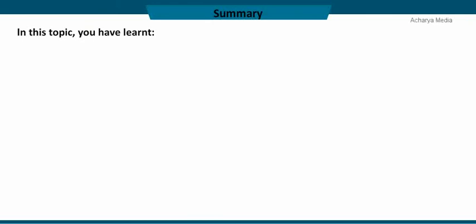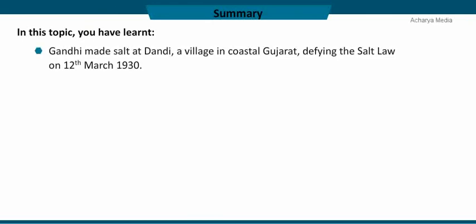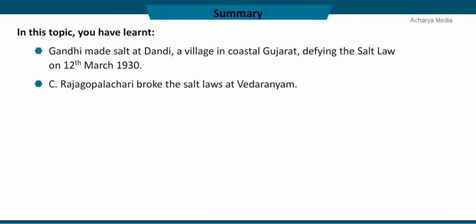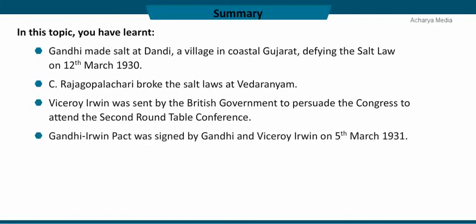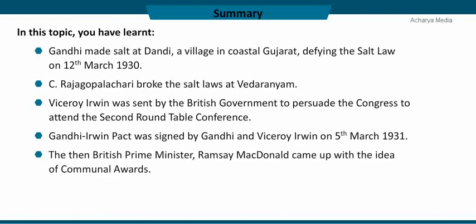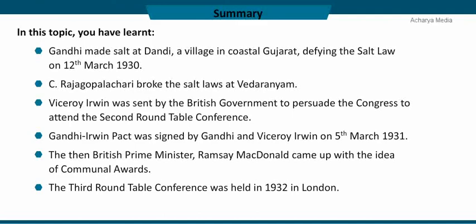In summary: Gandhi made salt at Dandi, a village in coastal Gujarat, defying the salt law on 12 March 1930. C. Rajagopalachari broke the salt laws at Vedaranyam. Viceroy Irwin was sent by the British government to persuade the Congress to attend the Second Roundtable Conference. The Gandhi-Irwin Pact was signed on 5 March 1931. Prime Minister Ramsay MacDonald came up with communal awards, and the third Roundtable Conference was held in 1932 in London.